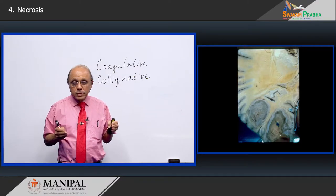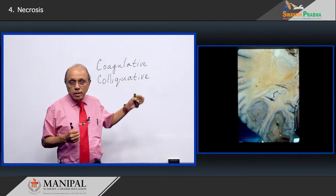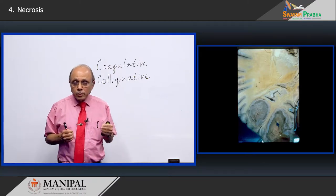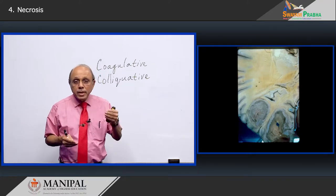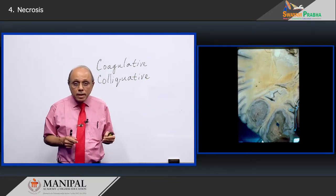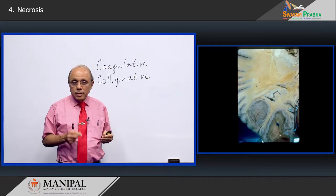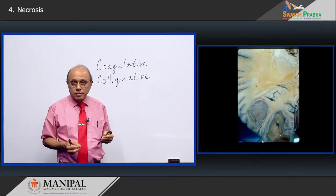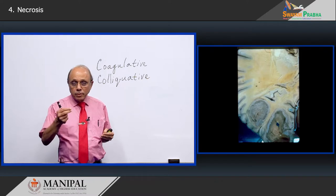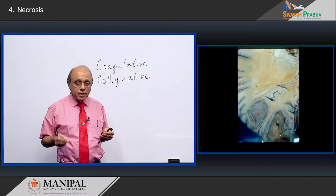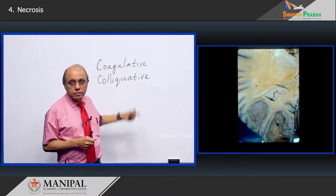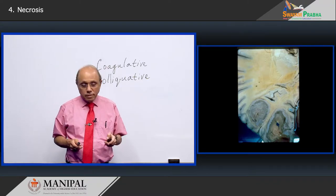Whenever tissue gets dissolved, which is what happens when there is necrosis in the brain, you get liquefactive necrosis. A more familiar and common example is the abscess. When you get a collection of pus, when you have an abscess, that abscess is an example of liquefactive necrosis.